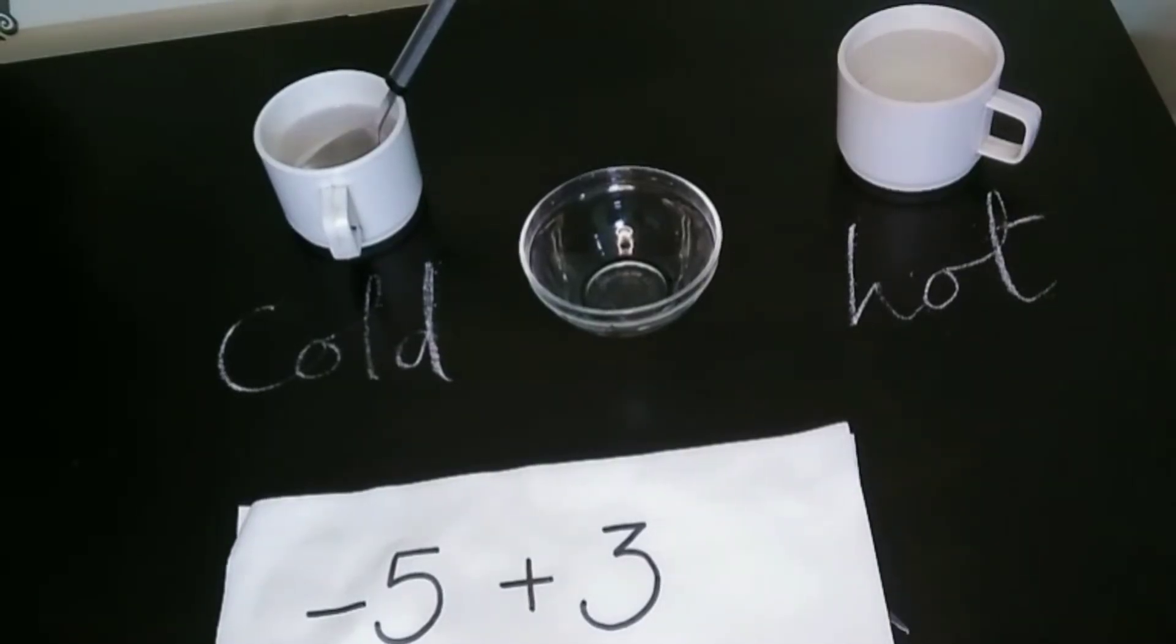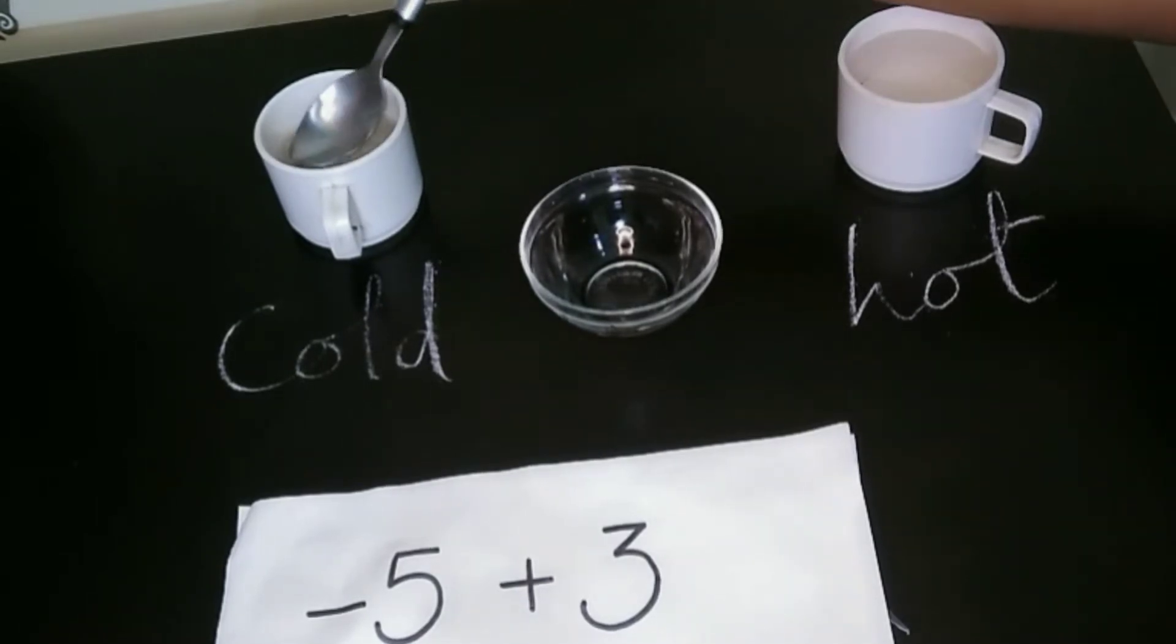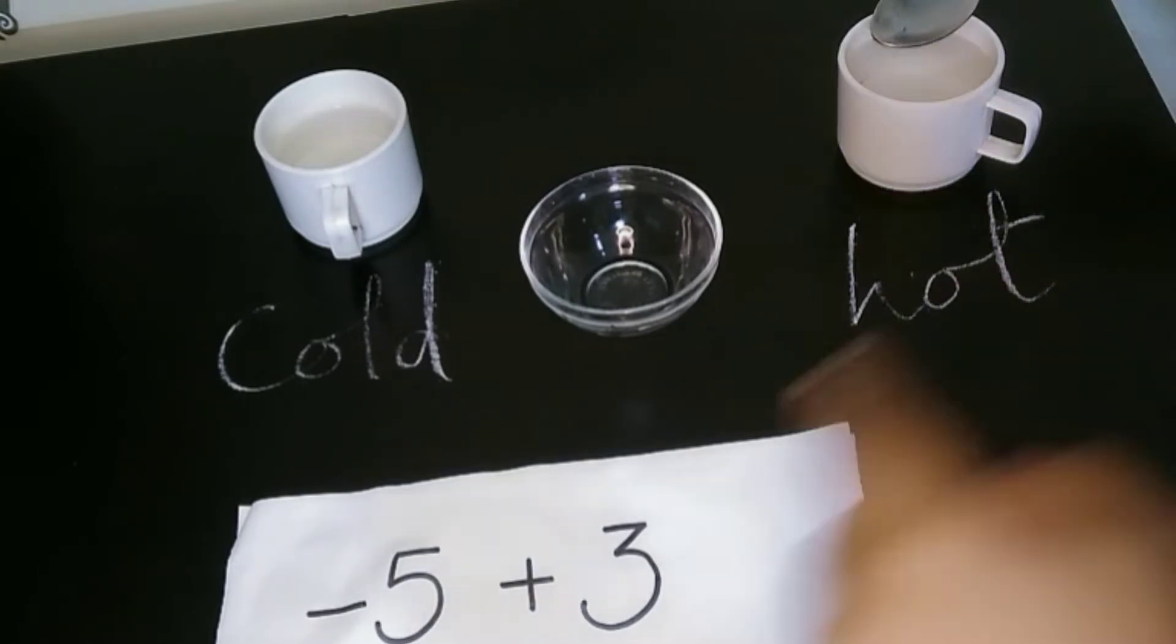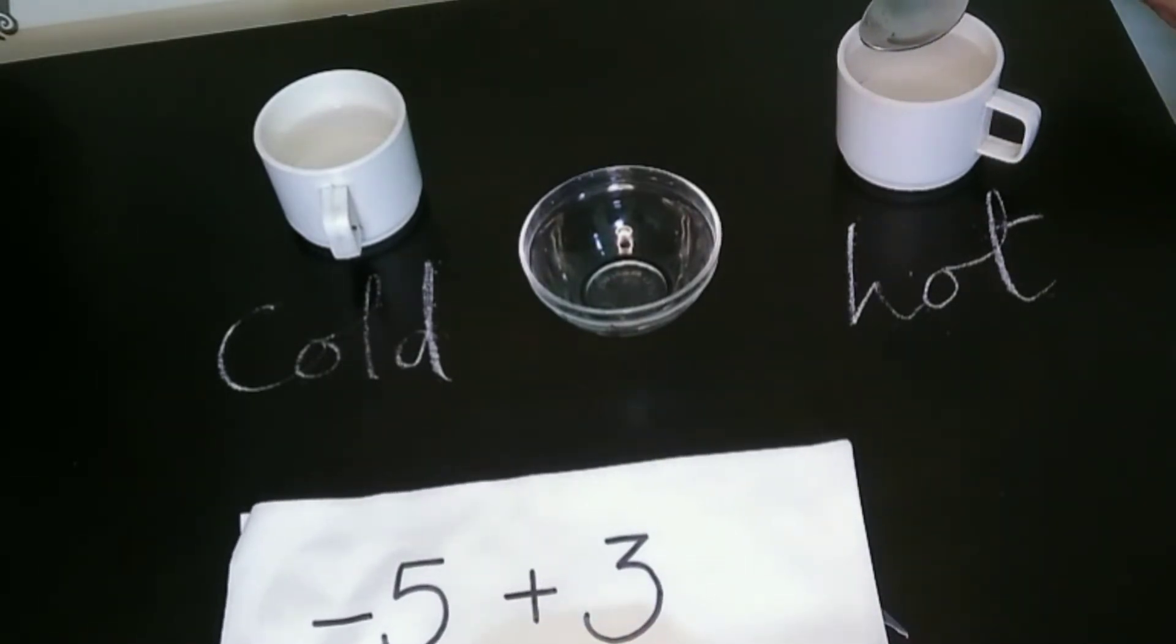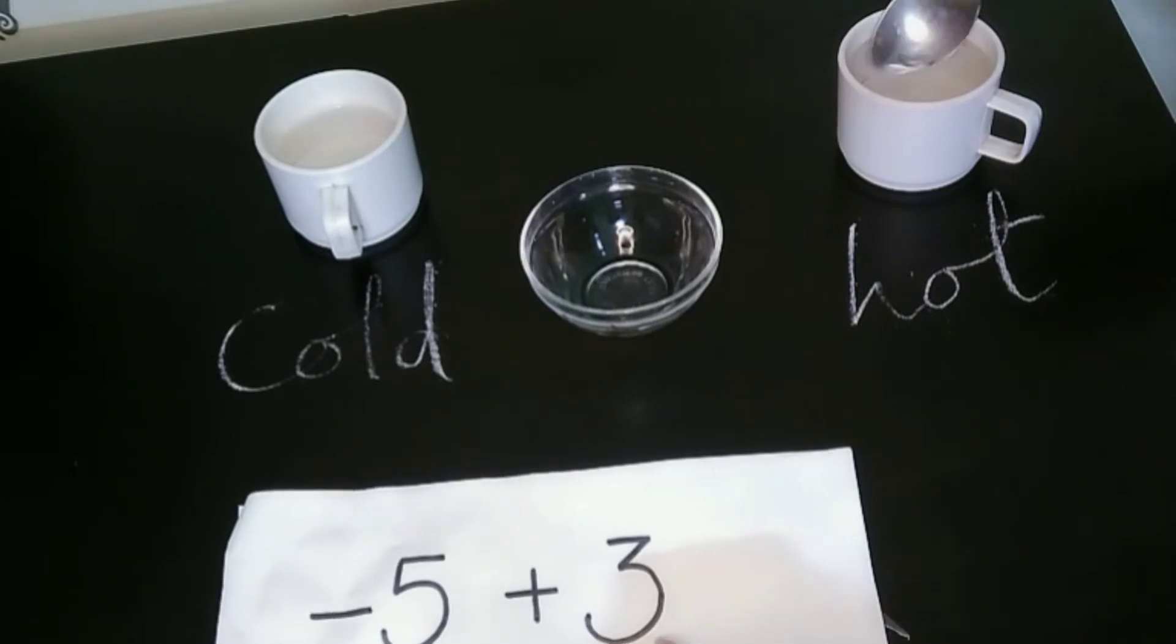How do you decide which sign to put for the answer? Today I am here with an activity to make that simple for you. Here I have taken one cup of cold water and one cup of hot water. If we mix one spoon of cold water and one spoon of hot water, we get room temperature water.